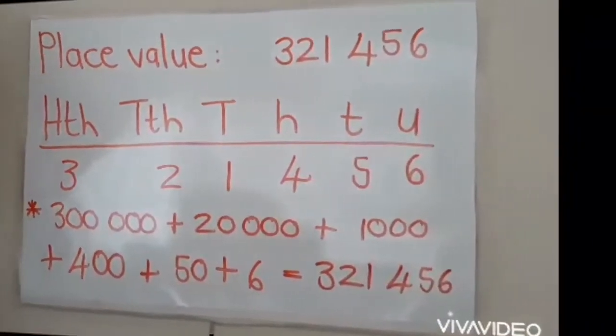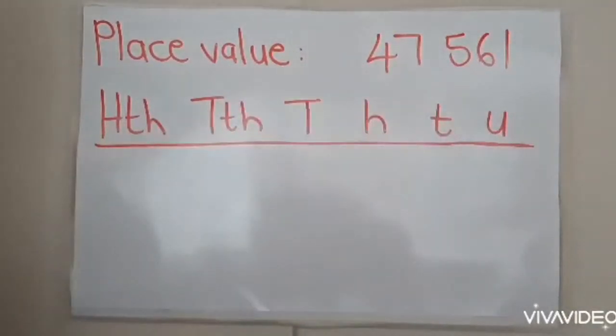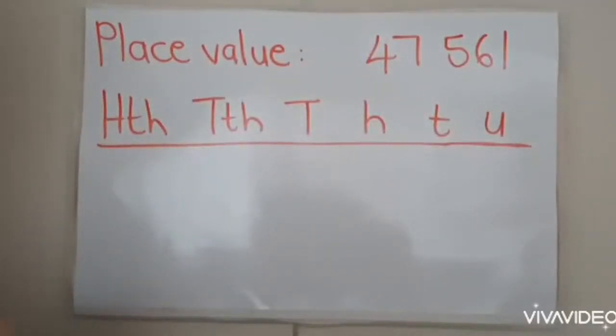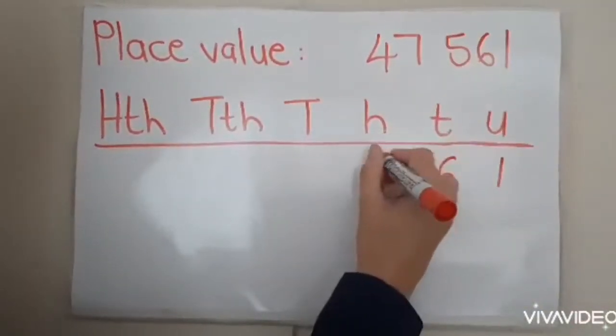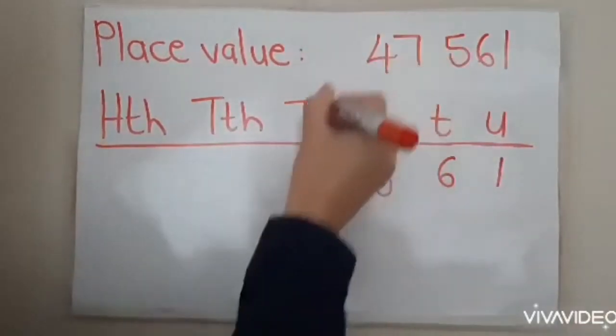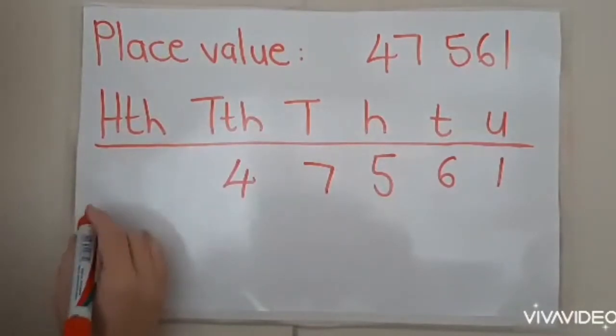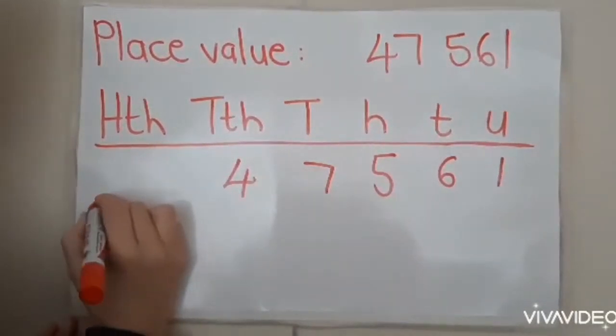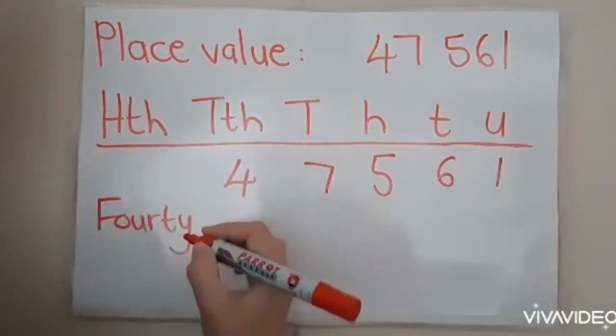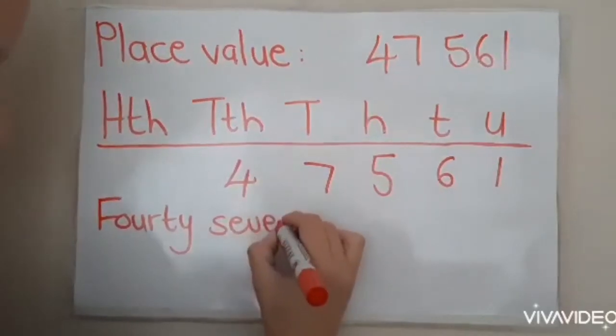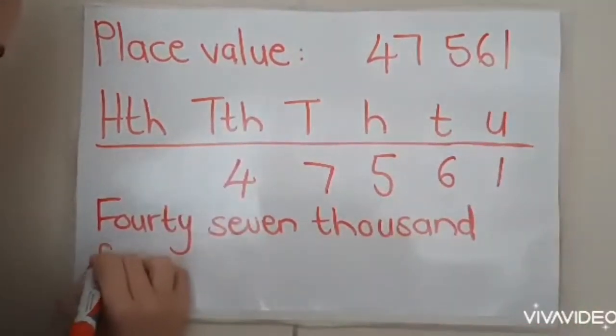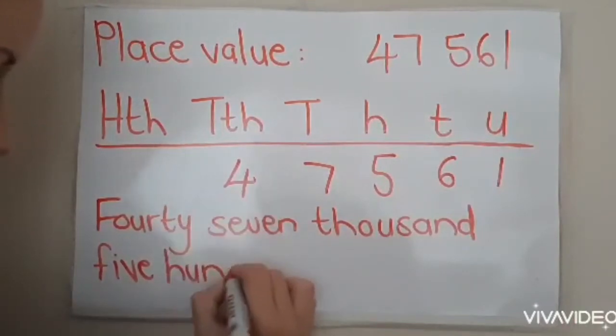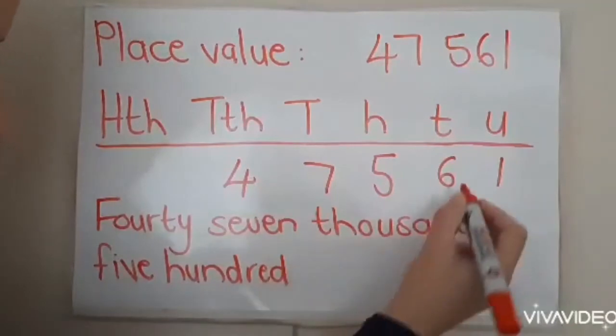So we can write that it is equal to three hundred and twenty-one thousand, four hundred and fifty-six. The big number forty-seven thousand, five hundred and sixty-one, we need to go and write this number in words. But first I would suggest that you first go and put it under the correct place value. So the one goes under units, sixty, five hundred, seven thousand, and forty thousand. So let's write it in words. So it's actually forty-seven thousand, five hundred and sixty-one.